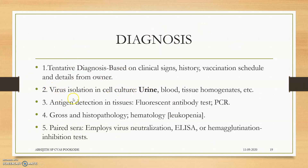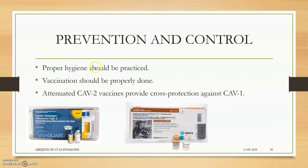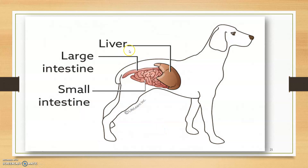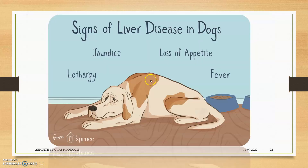Diagnosis is tentative based on clinical signs, virus isolation in cell culture and urine, antigen detection, gross pathology, and paired sera tests. Prevention and control: proper hygiene should be practiced. Vaccination should be practiced — attenuated CAV-2 vaccines provide cross-protection against CAV-1. CAV-2 causes infectious tracheobronchitis, while CAV-1 is the causative agent of ICH. These are the two vaccines mainly used.